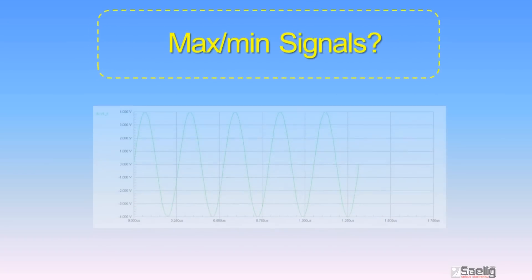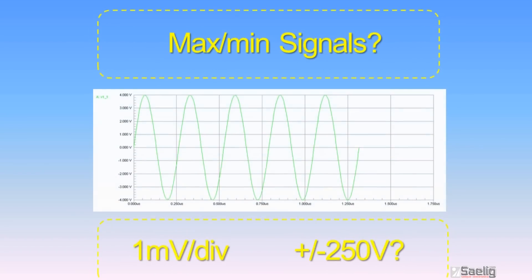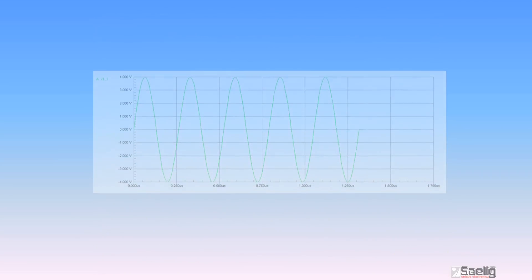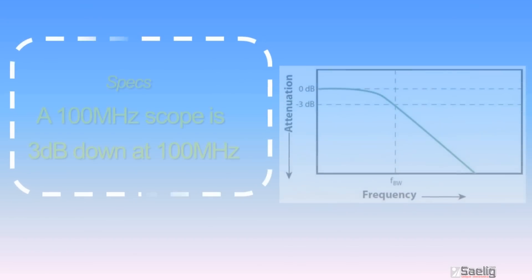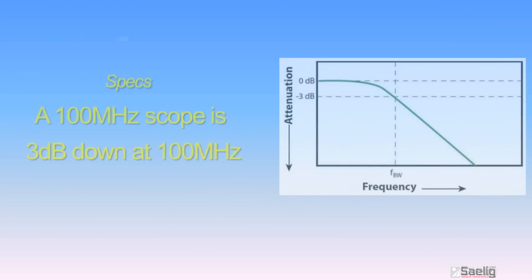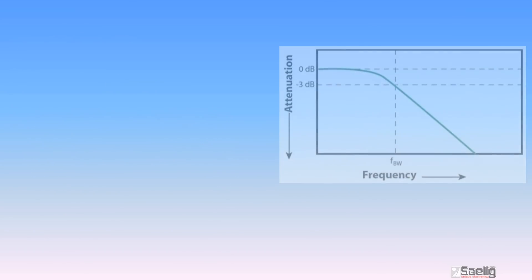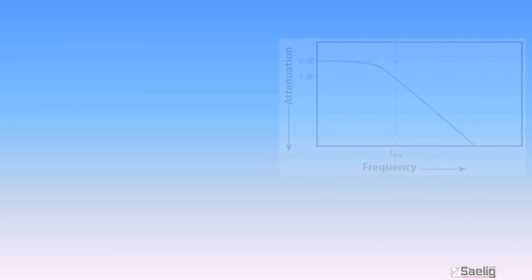Do you know what maximum or minimum signal sizes you'd like to measure? For 100MHz signals, you'll need a sample rate of at least 500MHz per second. But remember that a 100MHz scope is really 3dB down at 100MHz.